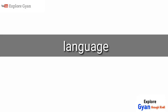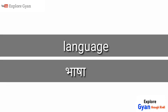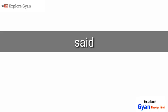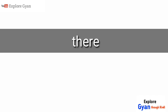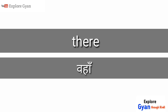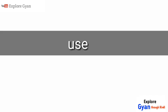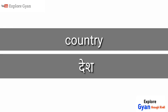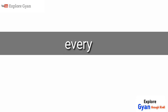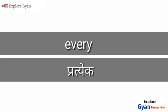'Language' - bahasha. 'Said' - kaha. 'There' - waha. 'Use' - upiyog. 'Country' - des. 'Every' - pratek.